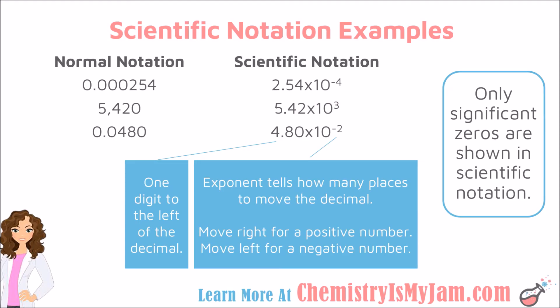A rule of thumb you can use to check yourself: if you have a very small normal number, you should have a negative exponent, whereas if you have a very large normal number, you should have a positive exponent. That is something you can look out for to help check your work.